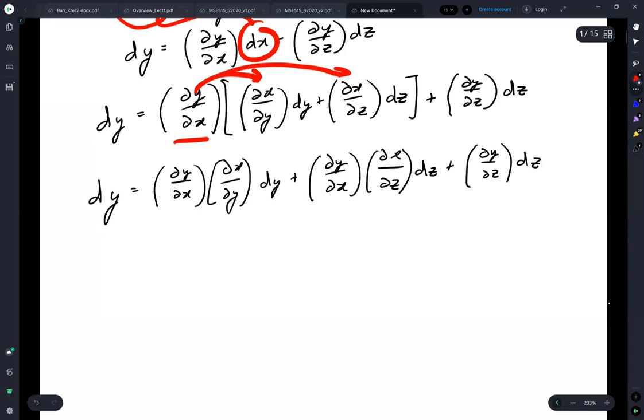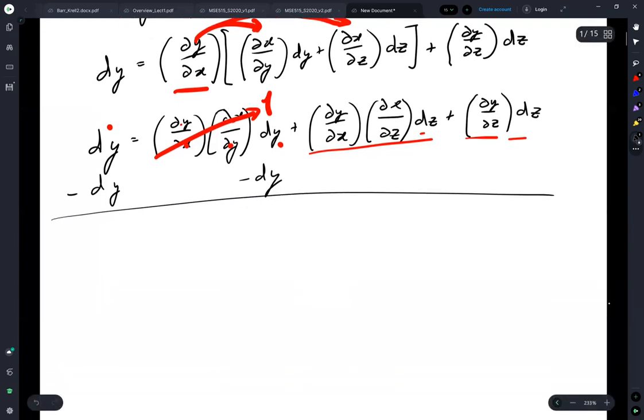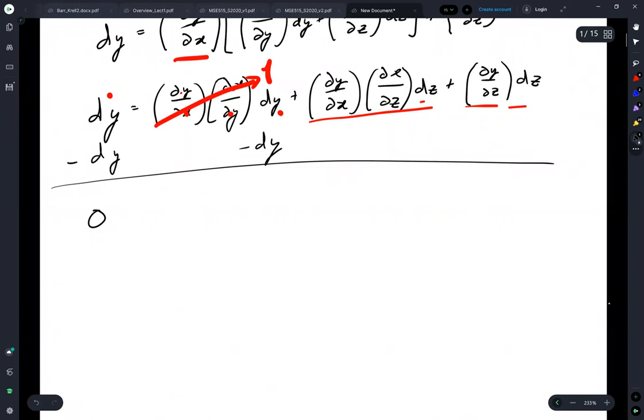Now, this term here, we got a dy by dy dx dx. That's just one. So now we've got dy is equal to dy plus this term plus this term. These dzs are going to get collected. But most important, we want to get rid of this dy, so we're going to subtract dy from both sides.